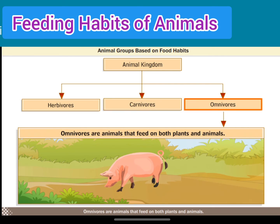Omnivores are animals that feed on both plants and animals.